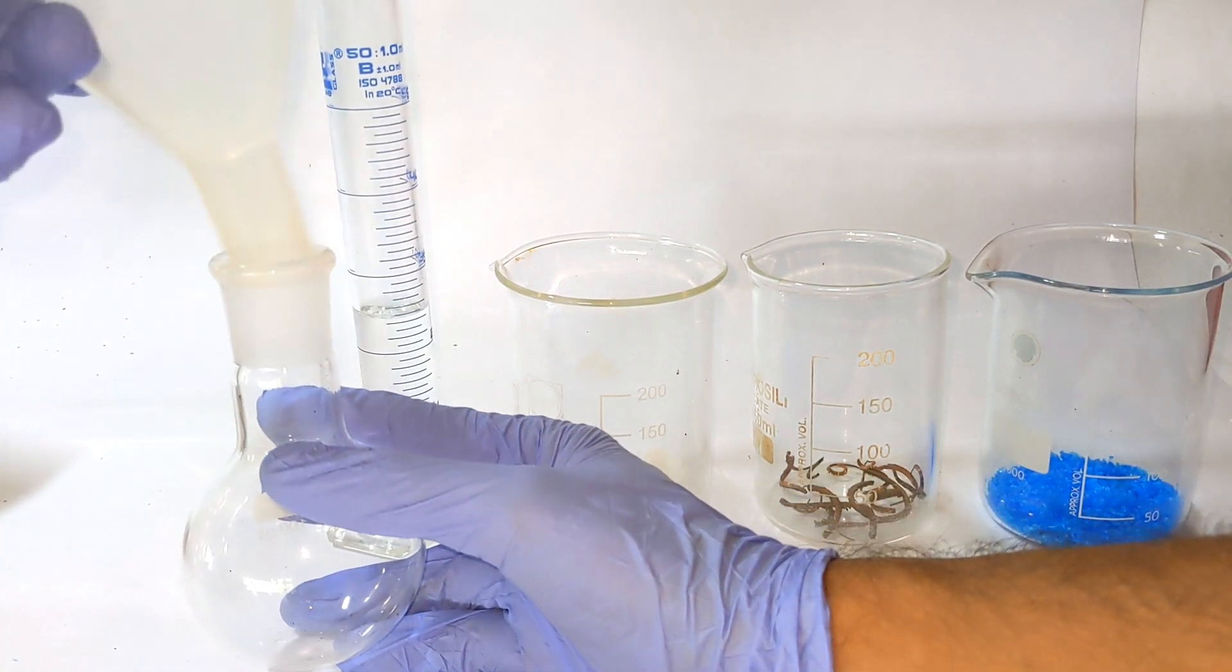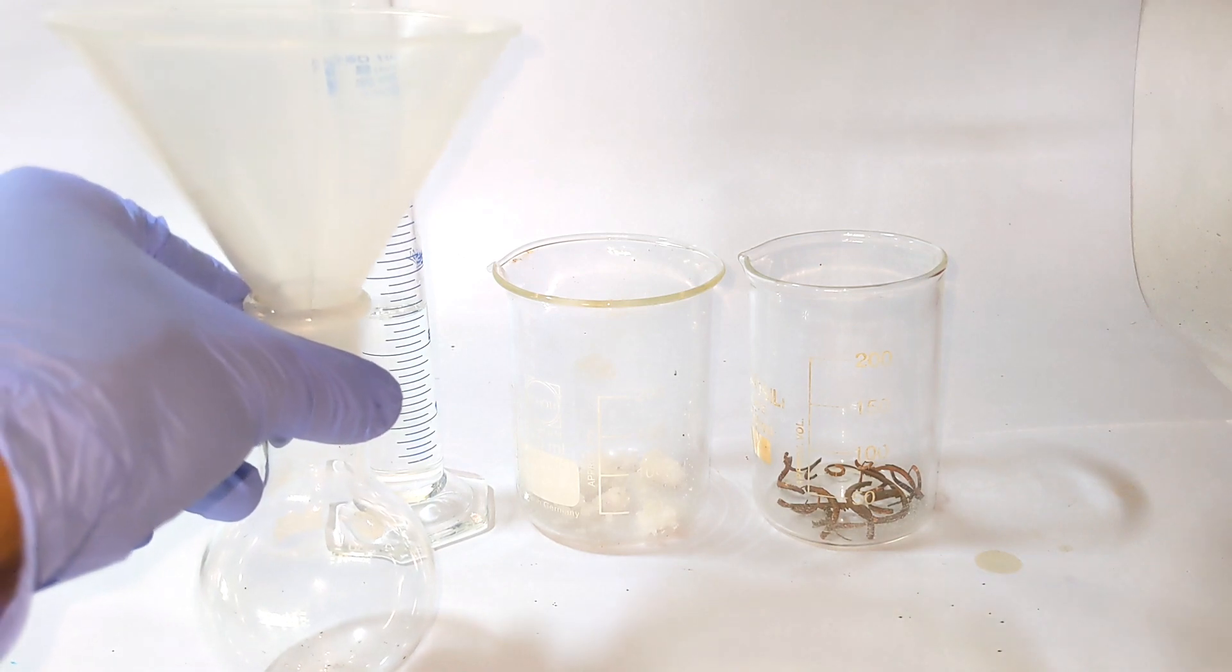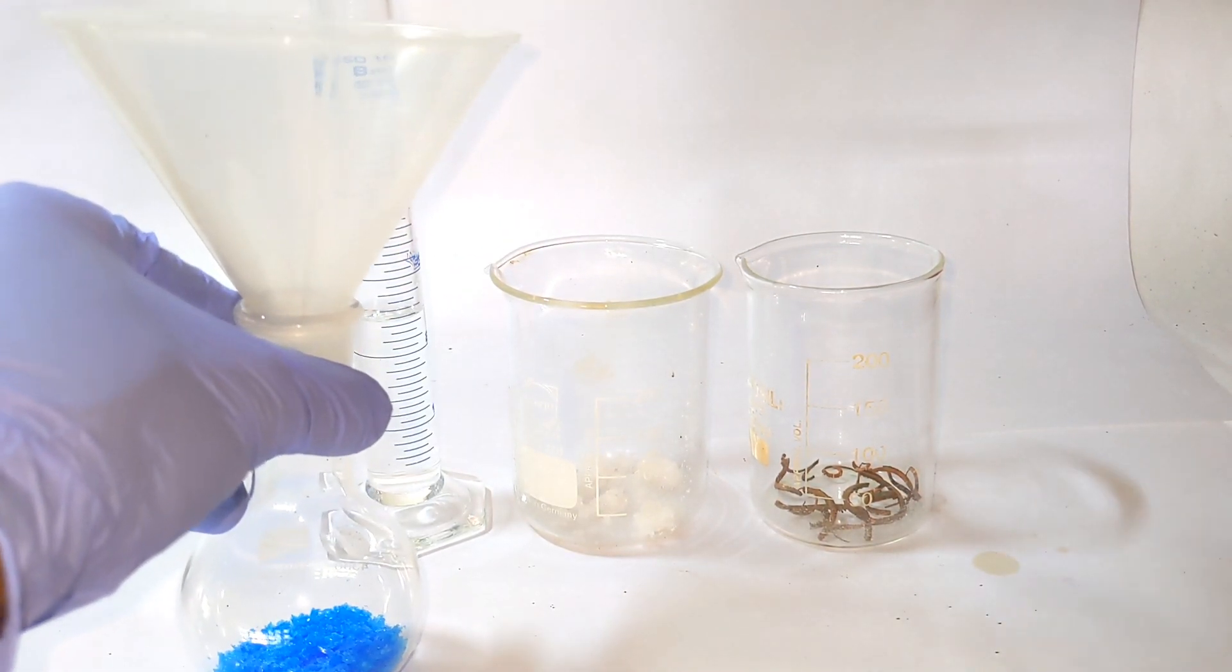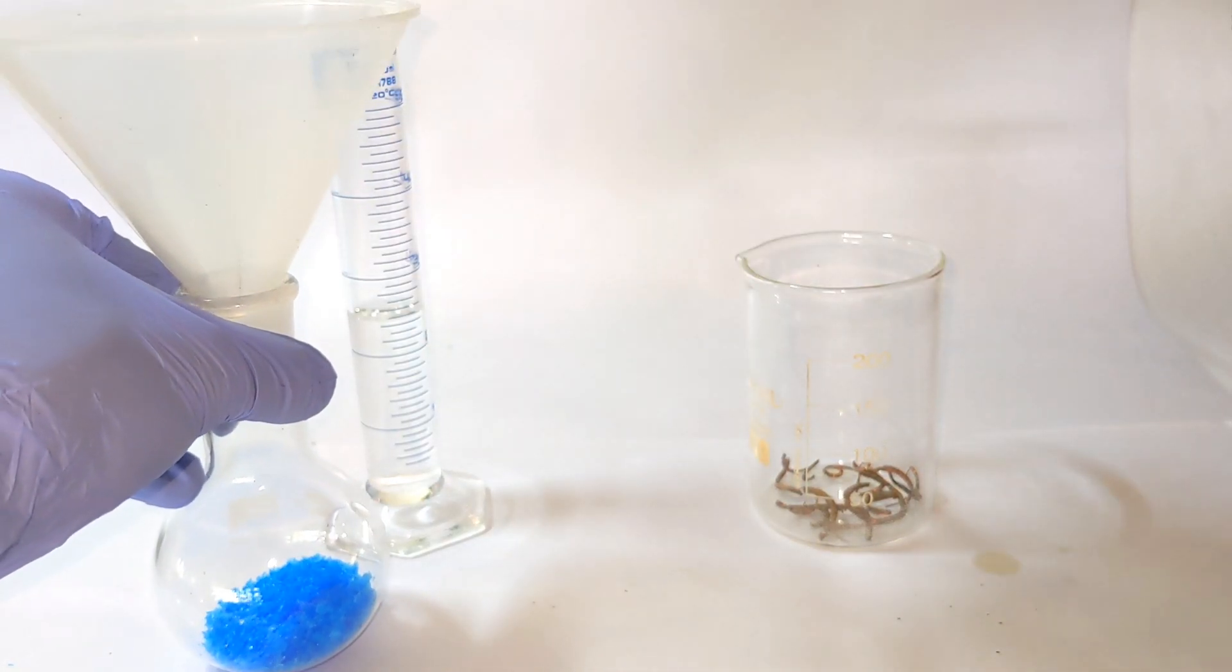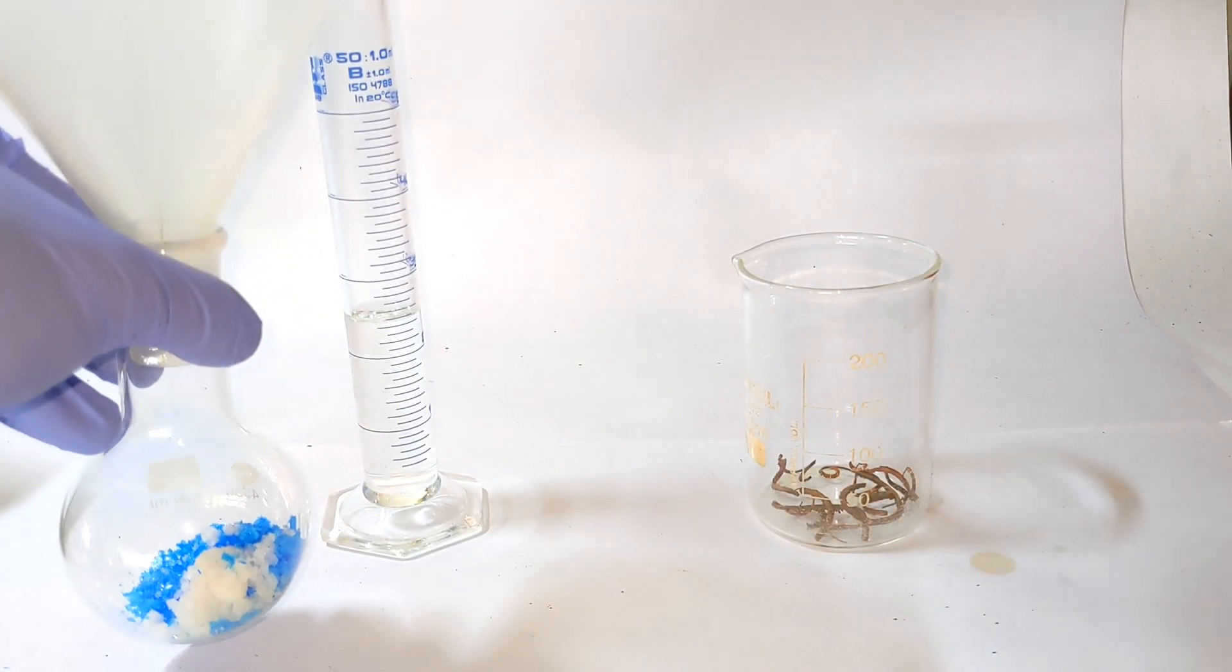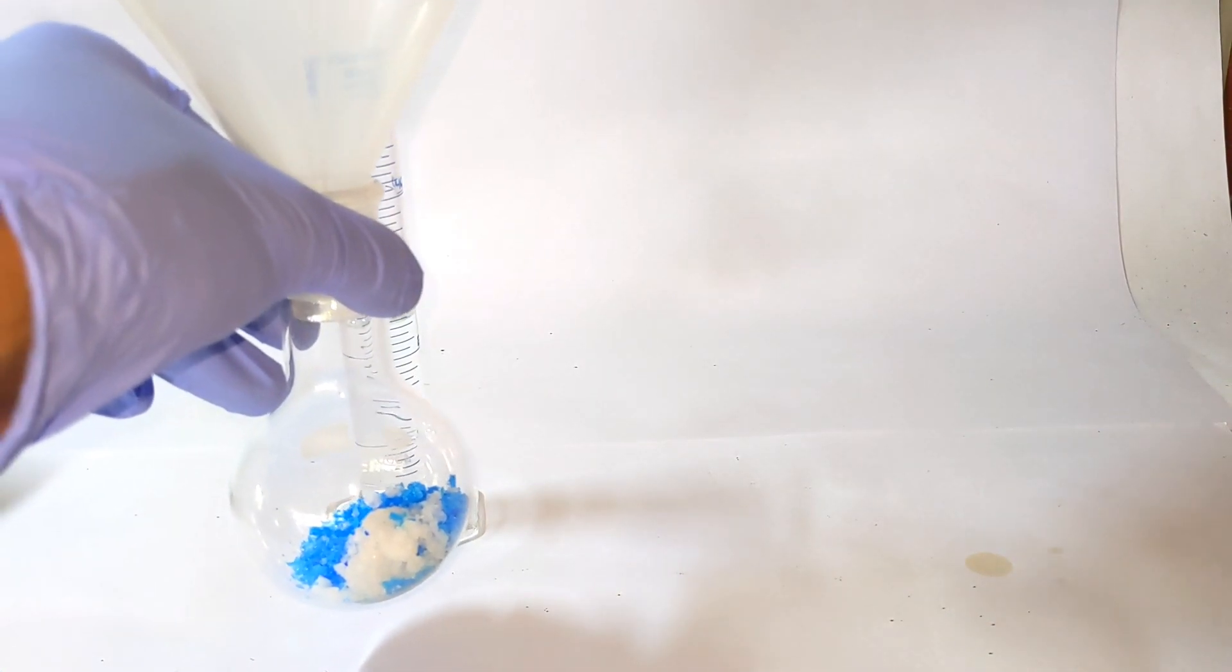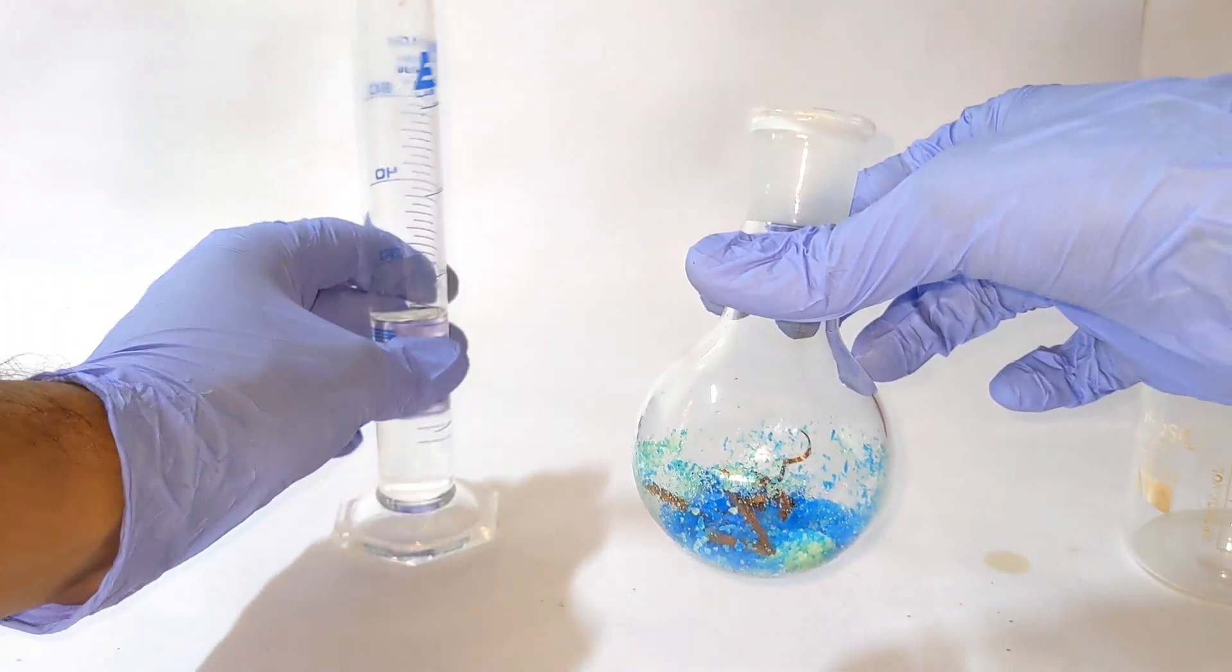Next, we need to make cuprous chloride or copper(I) chloride. For that, take a 100 ml round bottom flask. A powder funnel was placed on top. 10 grams of copper sulfate pentahydrate, 5 grams of sodium chloride, and then 10 grams of copper metal turnings were added to it. Copper turnings got stuck in the powder funnel as I had not cut them into tiny pieces.